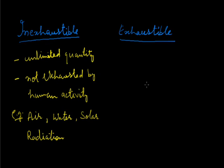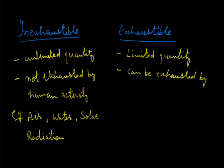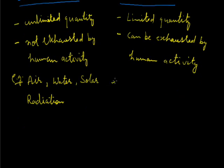The other type of natural resources is exhaustible resources. These are present in limited quantity. As these are present in limited quantity, so these can be finished, exhausted by human activity. We have discussed classification of natural resources, that is inexhaustible and exhaustible natural resources.